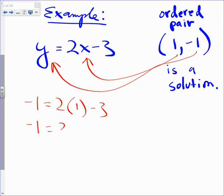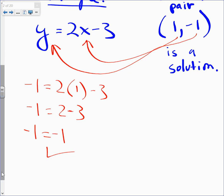Negative 1 equals 2 minus 3. Is this true? Let's see. Negative 1 equals 2 minus 3 is negative 1. Look at it. It checks. It satisfies.